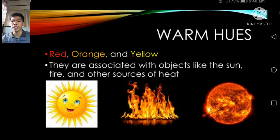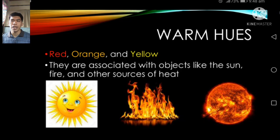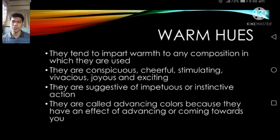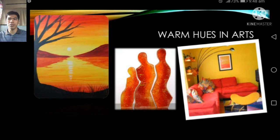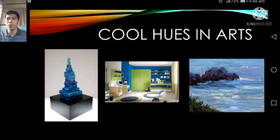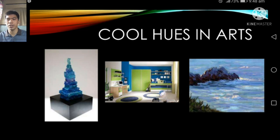Warm hues include red, orange, and yellow. They are associated with objects like the sun, fire, and other sources of heat, and they impart warmth to any composition in which they are used. Cold hues are those where blue predominates — such as green-blue, blue, and blue-violet. They cause surfaces to appear recessive, suggest distance, and are calm, sober, restful, and inconspicuous.